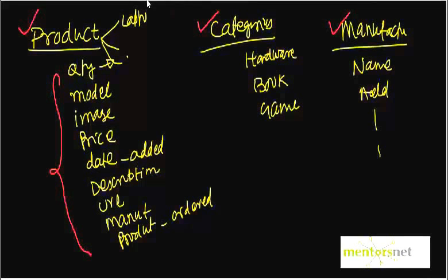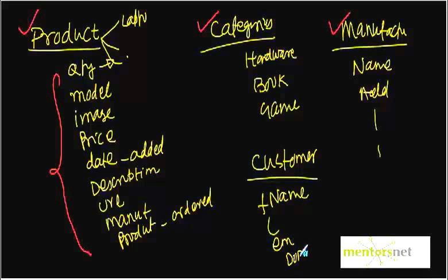Next set of entities - we can think about customer. Customer is an entity. What is the customer name? What is his first name, last name, email address, date of birth if you want to keep track of that, the password for his login, the customer's address, the customer's credit card number, and so on. So this is another entity.